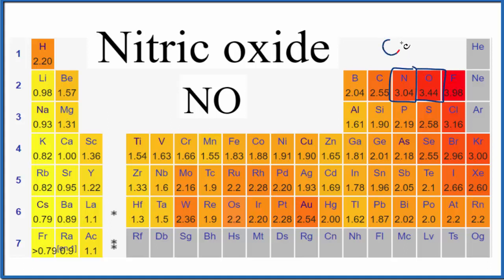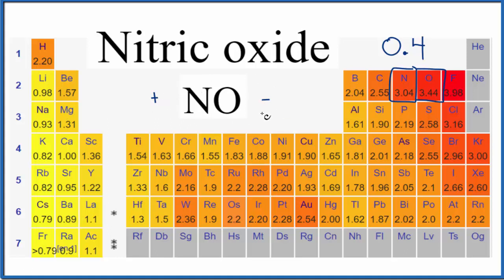So we have a difference of 0.4. That does mean that there will be a dipole here. This oxygen will be a little more negative. Nitrogen will be a little more positive, since the electrons in that bond will be shared unequally — they'll be with the oxygen more.